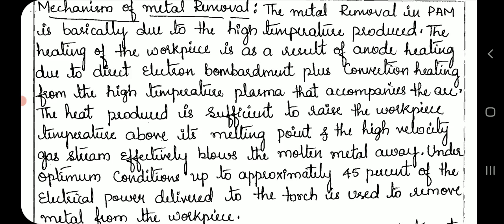The heat produced is sufficient to raise the workpiece temperature above its melting point, and the high velocity gas stream effectively blows the molten metal away. Under optimum conditions, up to approximately 45 percent of the electrical power delivered to the torch is used to remove metal from the workpiece.